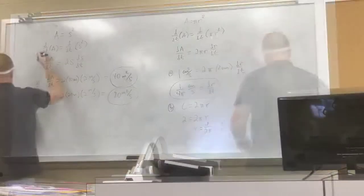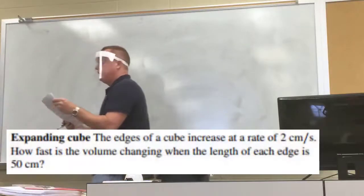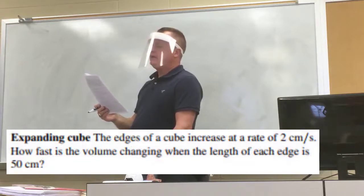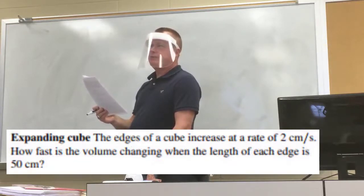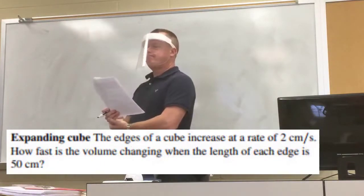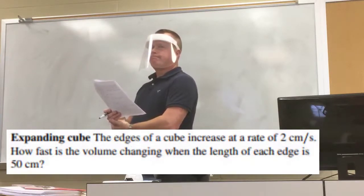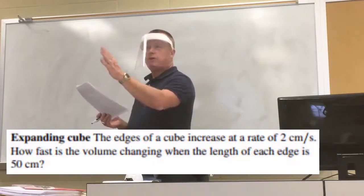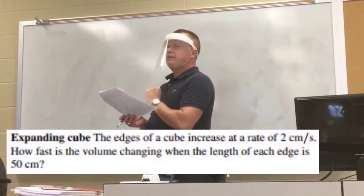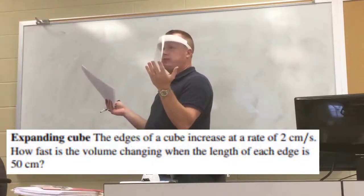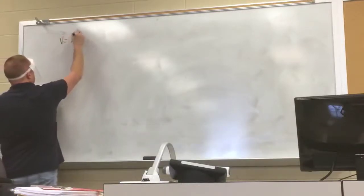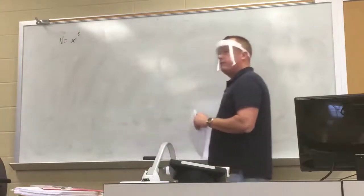Next problem: the edges of a cube increase at a rate of 2 centimeters per second. How fast is the volume changing when the length of each edge is 50 centimeters? We need the volume of a cube. You just cube the side — all sides are the same length — so V = x³.